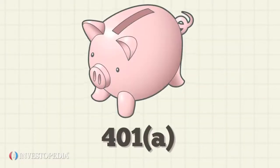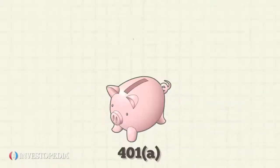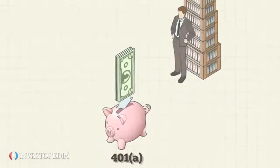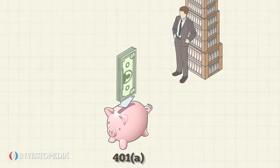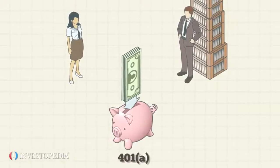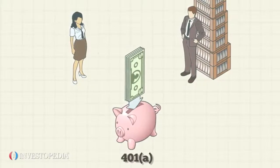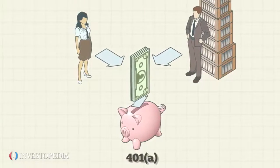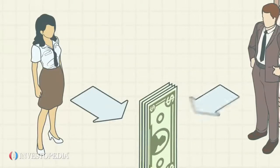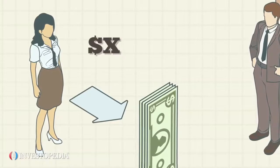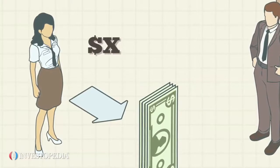A 401(a) plan is a type of money purchase retirement plan set up by an employer. Just as in the more familiar 401(k) plan, the employee, employer, or a combination of both make 401(a) plan retirement contributions. Under a 401(a) plan, employees either make set dollar amount contributions to the plan or pay an amount based on a percentage of their wages.